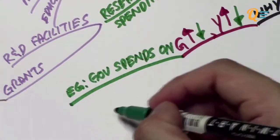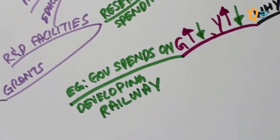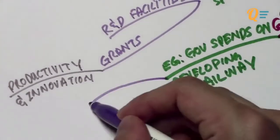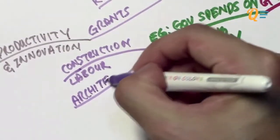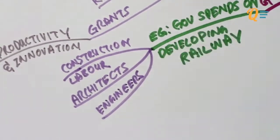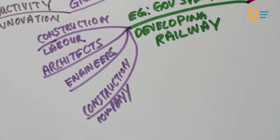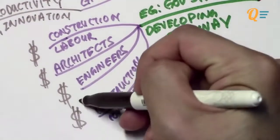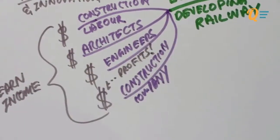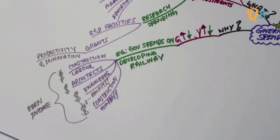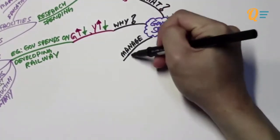Let's use a simple example to explain this. Imagine the government is going to spend on developing a railway. It's going to need construction workers, architects, engineers, and a construction company to manage them all. When the government spends, all these individuals will get a form of income — the construction company gets profits, and the rest earn wages. That is why when the government spends, GDP increases, and vice versa, when spending is cut, GDP drops.